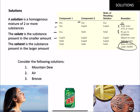Let's think about Mountain Dew. The solvent would be water — it's mostly water. The solutes would include sugar, probably number one, caffeine, some flavors, yellow number one maybe, and CO2, carbon dioxide, to give it the fizz.